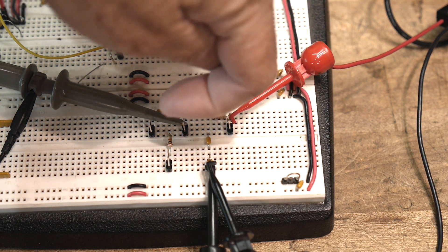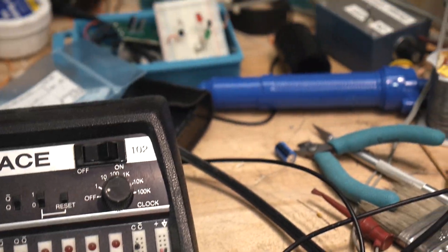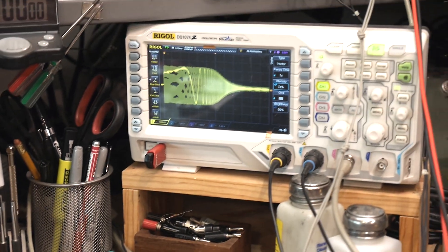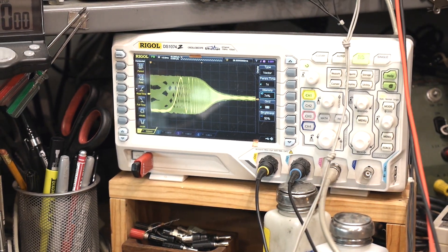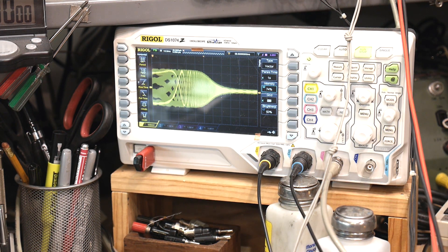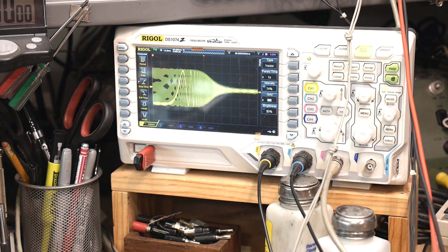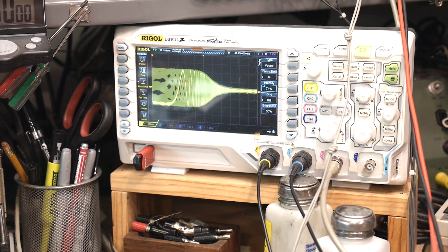We'll put the scope on one side and the generator on the other side. So things are coming in here and going out here. And let's take a look at the oscilloscope and we have a low-pass filter, which makes sense. All of the high frequencies are being attenuated.